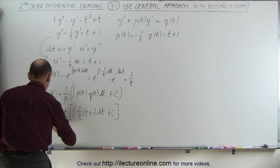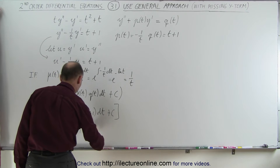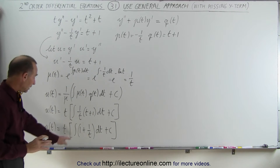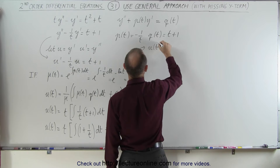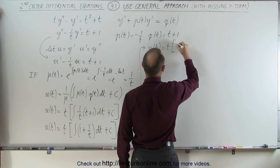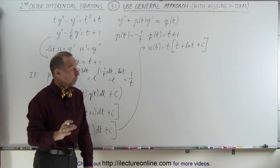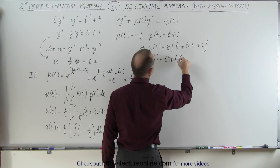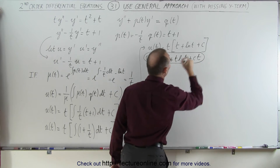Multiplying through inside the integral, U of T equals T times the integral of (1 plus 1 over T) dt, plus C. Integrating that gives T times (T plus natural log of T plus a constant). Multiplying out: U of T equals T squared plus T times the natural log of T plus C times T. That is the solution to the first-order equation.